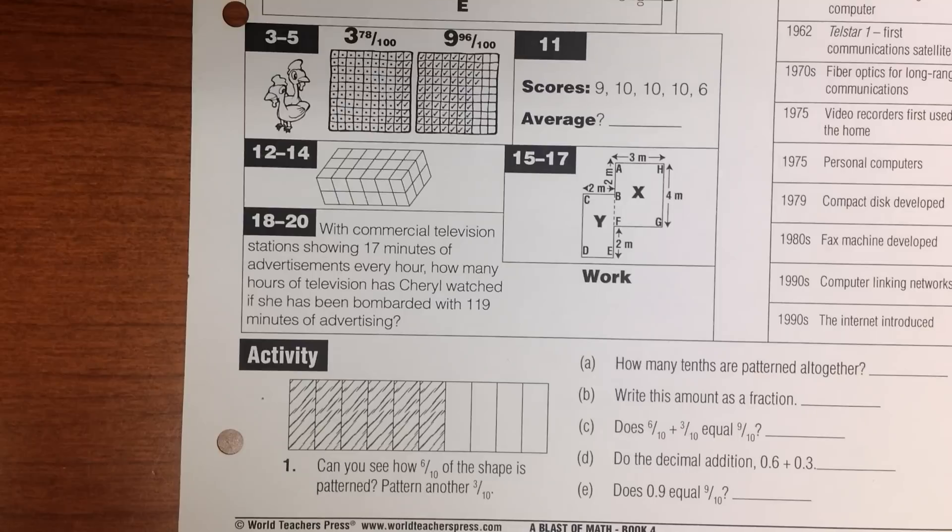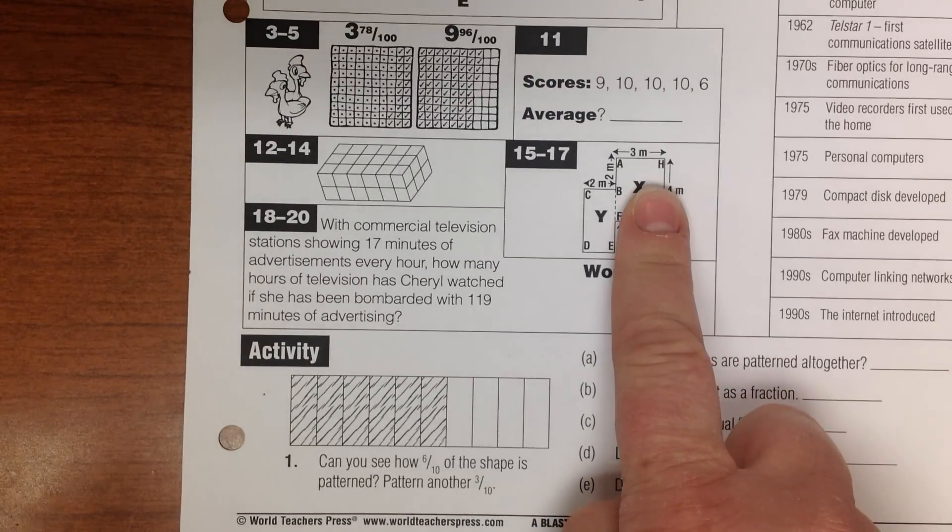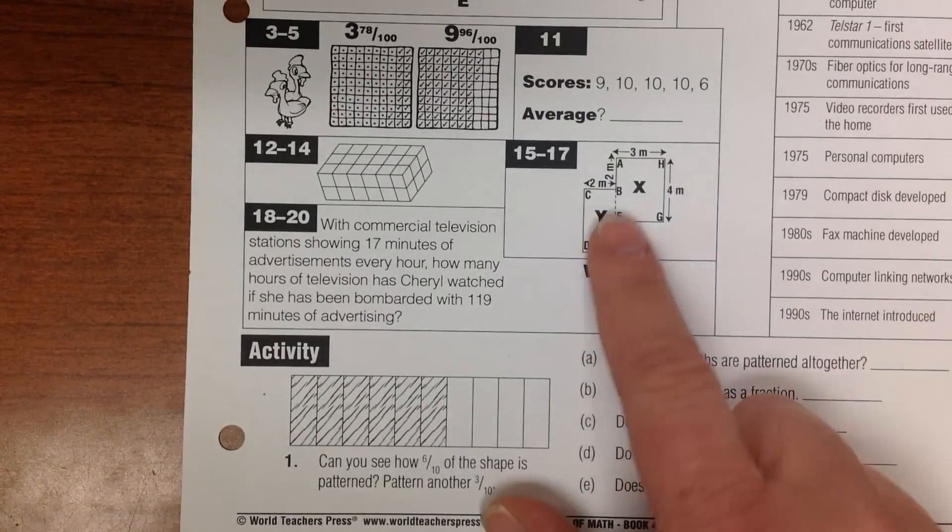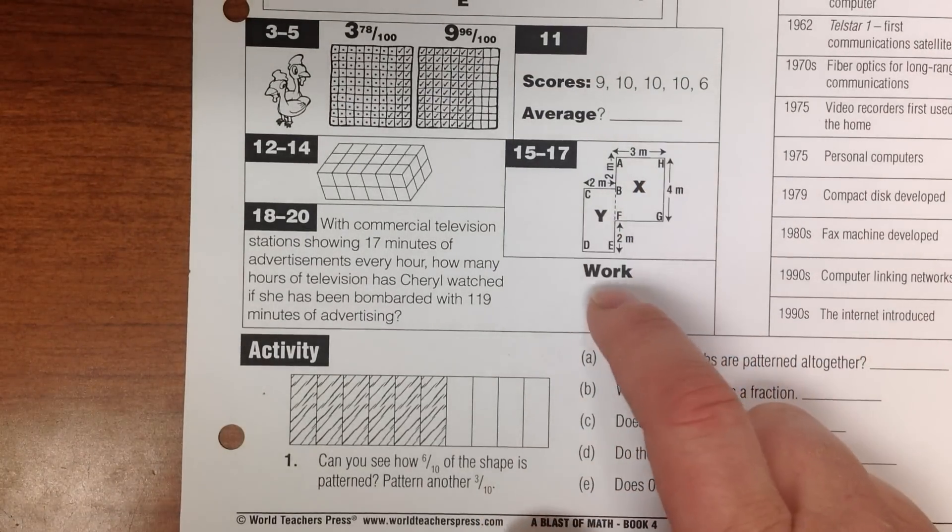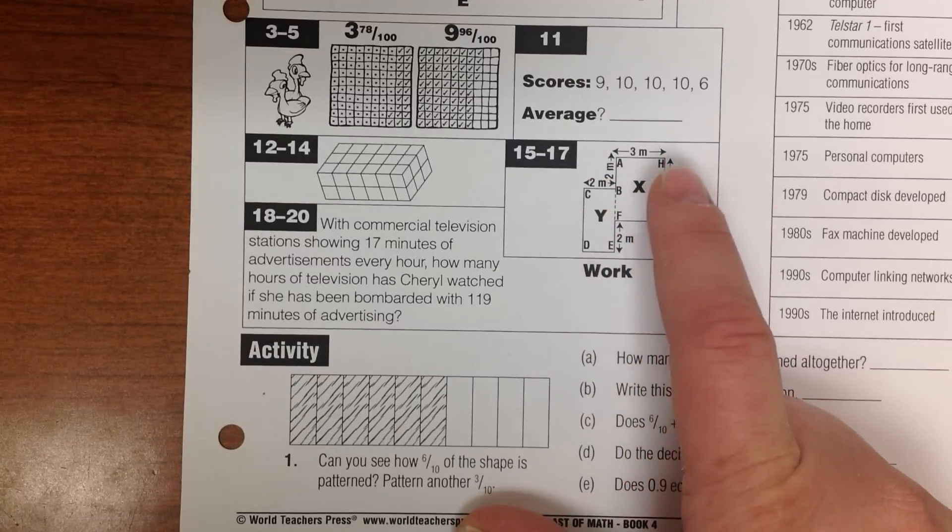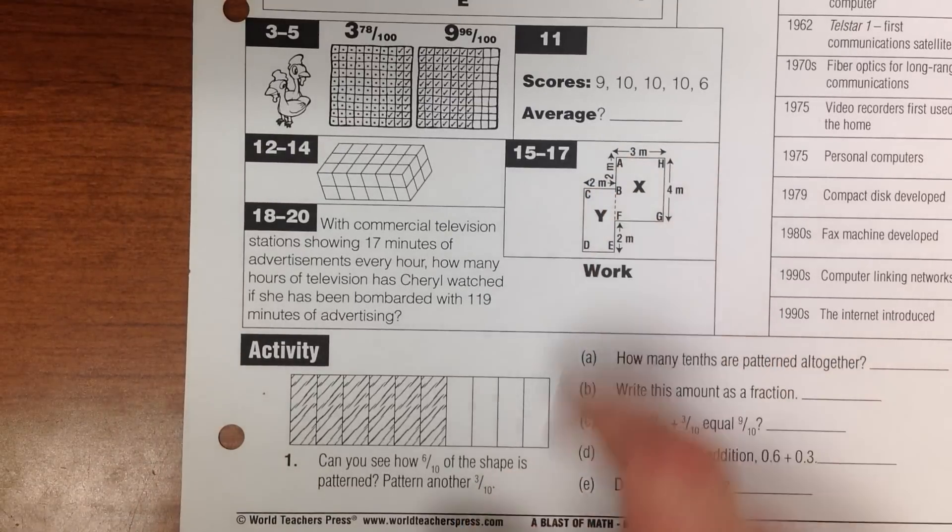Number 17. Now that you have worked out CD's length, you should be able to work out the area of shape Y. Do this, and then add it to the area of shape X to find the total shape's area. So, find the area of Y, and then add that to X, the area of X, so you have the total area of this shape.